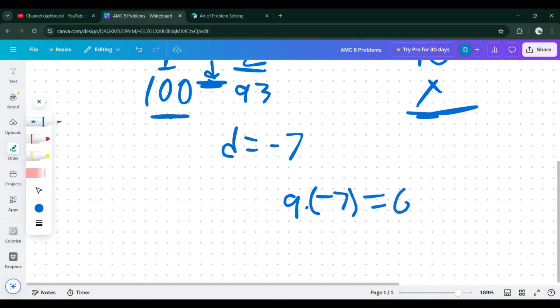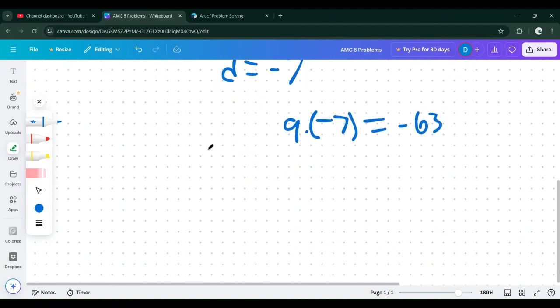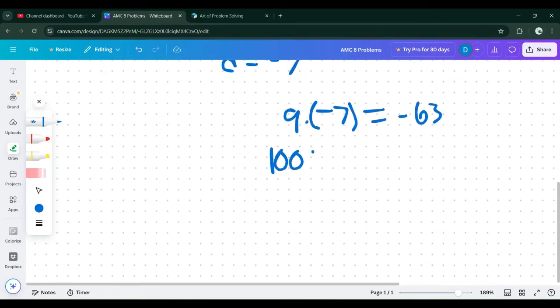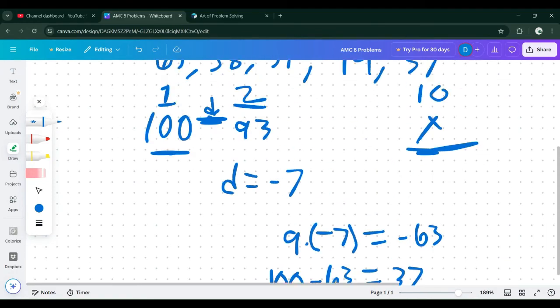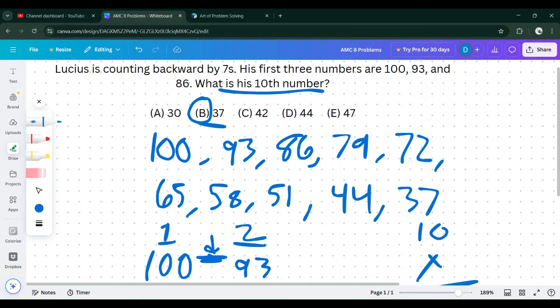We get negative 63 and we just add it to 100 to find the answer, which is 37 as well. We did it two different ways and got the same answer, so we know we are correct. The answer to this problem is B.